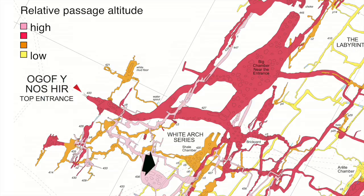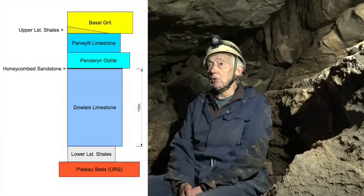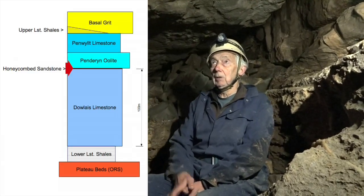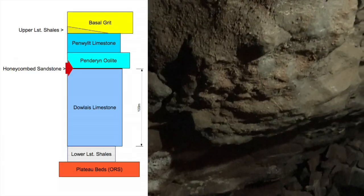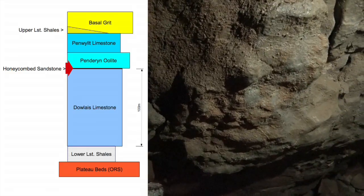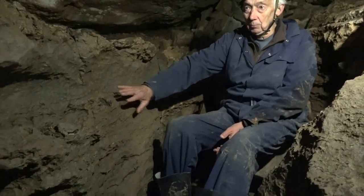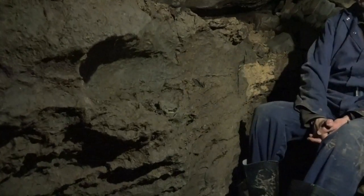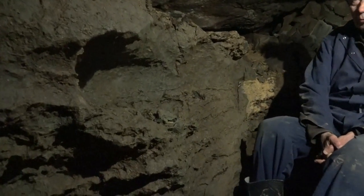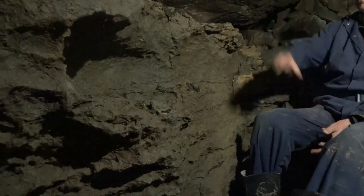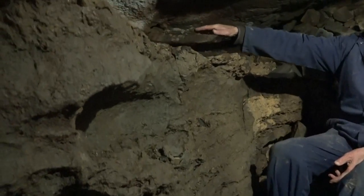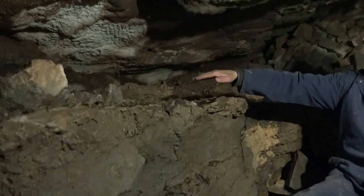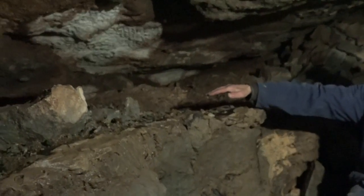We're here at the highest geological point in the cave, at the junction between the overlying Penderein oolite and the doglice limestone beneath, and this is the honeycomb sandstone again. It differs very slightly to what we saw on the surface. There's a well-marked shale band, now converted to clay.